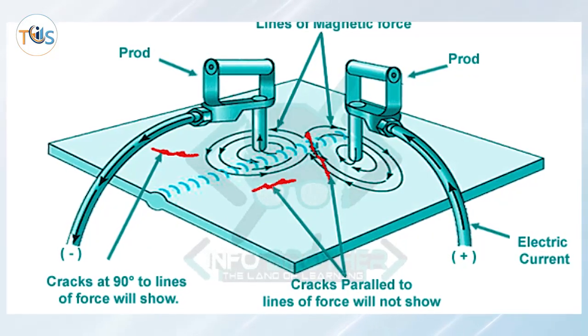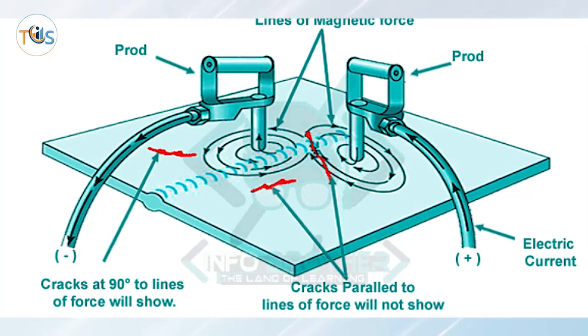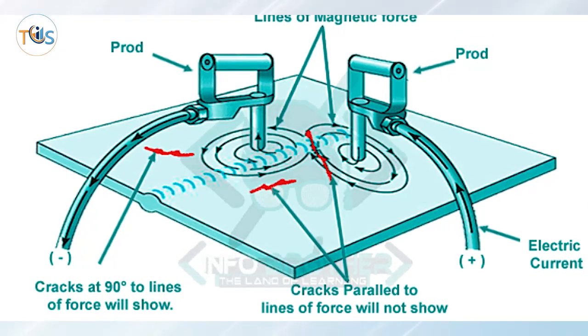The current between the prods creates a circular magnetic field that is used in magnetic particle inspection. Prods are made from copper and have an insulated handle to protect the operator. One of the prods has a trigger switch so the current can be easily and quickly turned on and off.